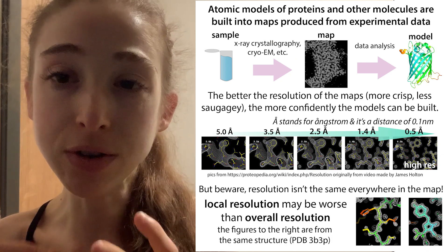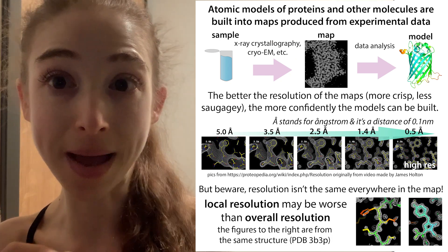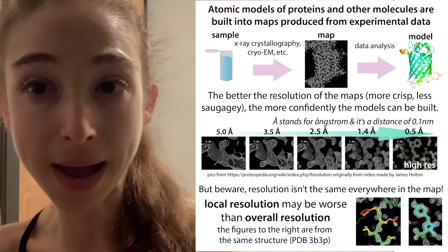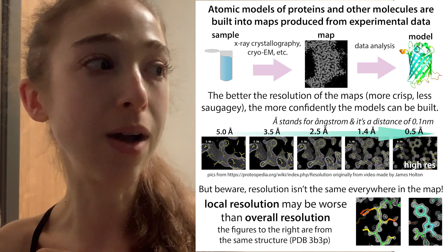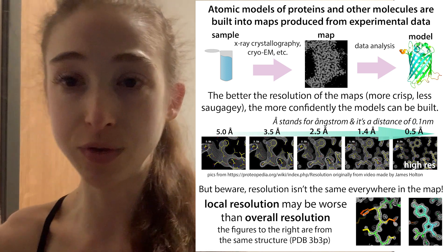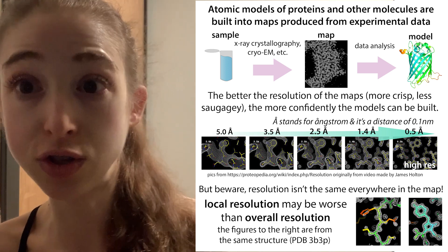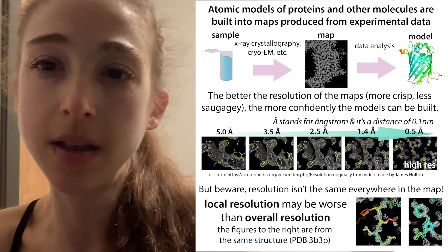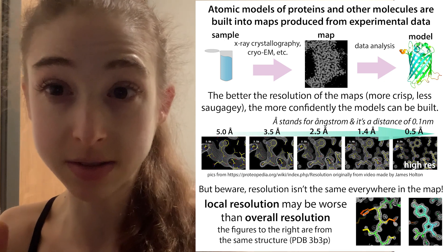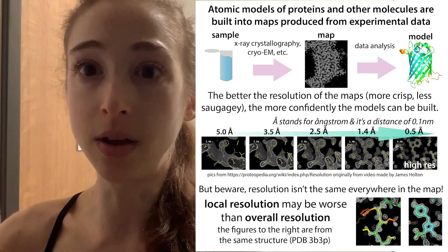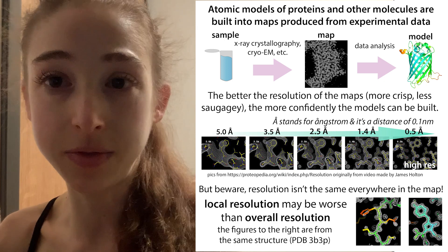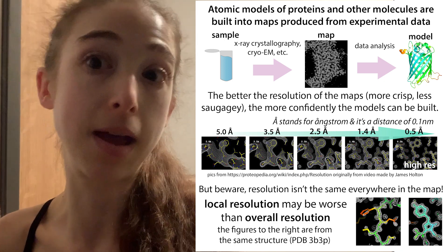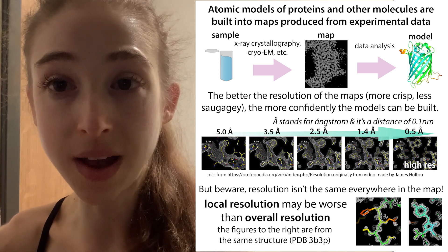The better the resolution, the crisper the map, the less sausagey it is, and the easier it is to pinpoint things within the map. It's similar to using a maps app — if you're trying to find a specific pizza place in San Francisco, getting a map of the whole city isn't very helpful. But if you get a street view, it's a lot easier to find.